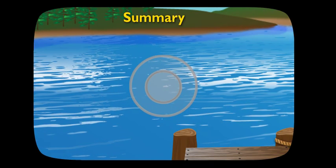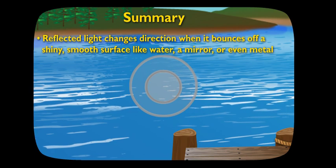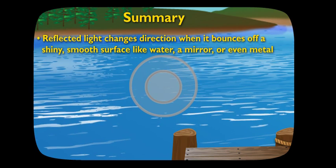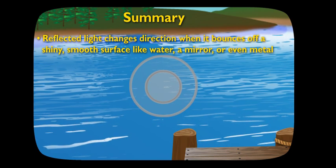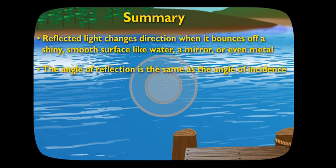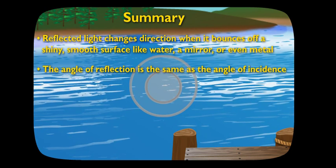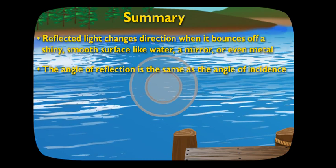Light's got so many cool qualities. Light that's reflected changes direction when it bounces off a shiny, smooth surface, like water, or a mirror, or even metal. When it does, the angle of reflection is the same as the angle of incidence, the angle at which the light hits.